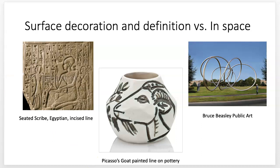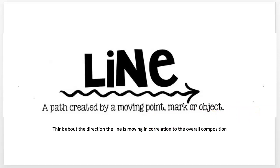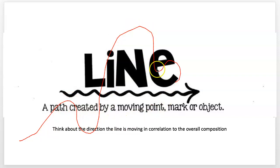We could think of line as a path created by a moving point or object in 2D. But in 3D, we could think of it as still having movement or direction — like a story that you almost read. It has a beginning point, a middle, and it goes through a progression. Our eye reads how it works in space. So you want to have, like a good story, a beginning with a strong ending and a plot in between.